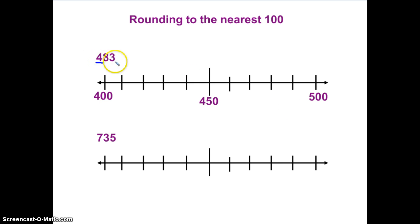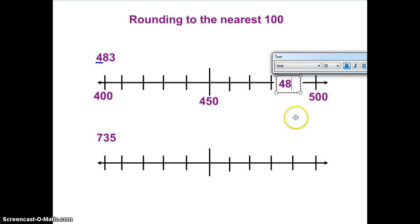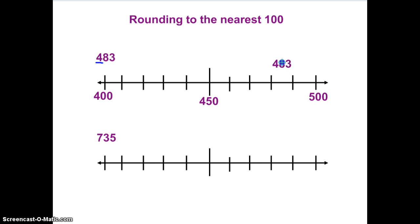Now I have 483 — where is that on my number line? Here's 450. Each one of these is ten, so be careful this time: 460, 470, 480 — right about there is 483. Let's draw our dot. I'm rounding to the nearest hundred right here. This time I'm going to look right next door, and it's the tens place. You're always going to look at the digit right next door. Eight tens — is that five or more or four or less? That's five or more. So 483 is going to round to the next hundred — 500.